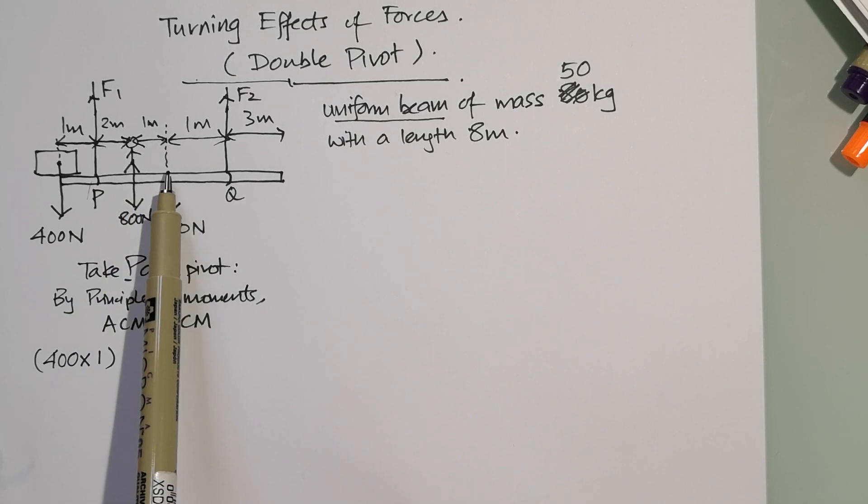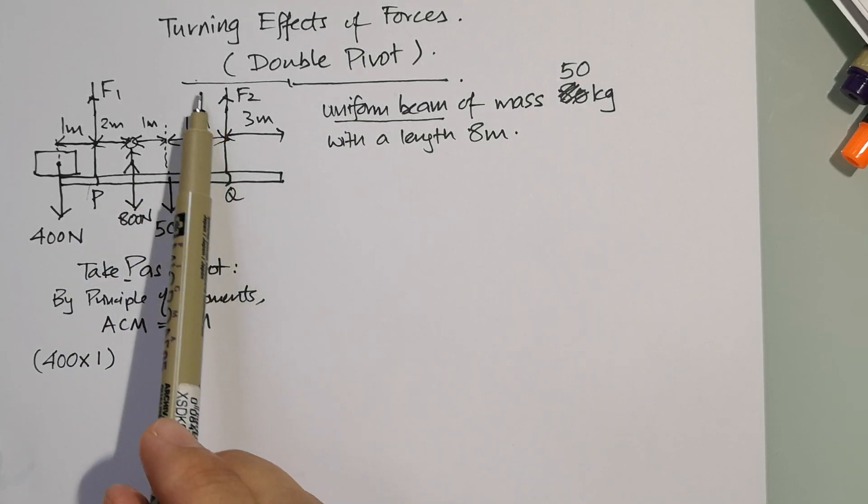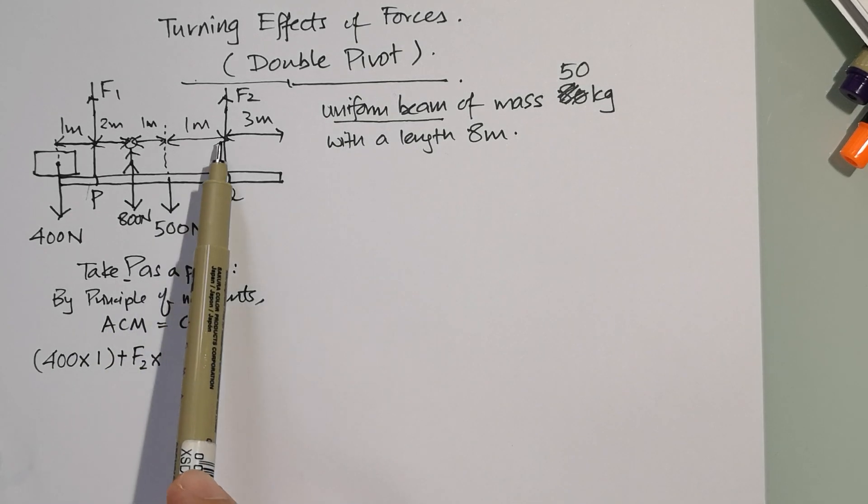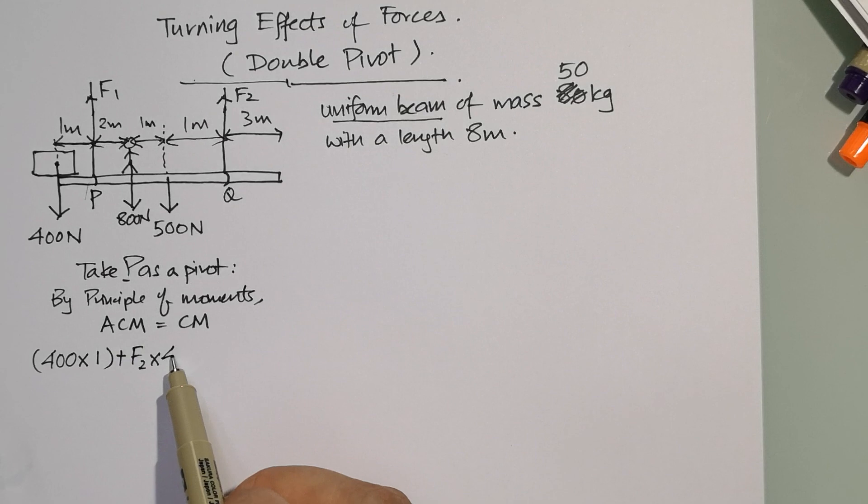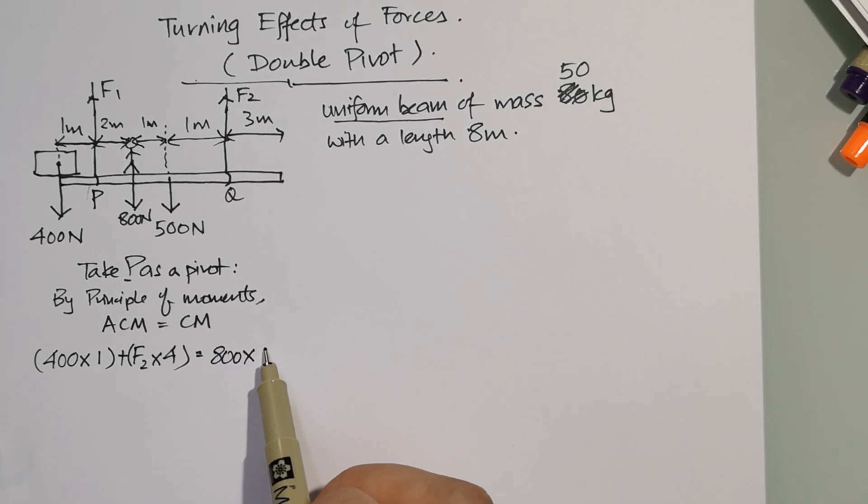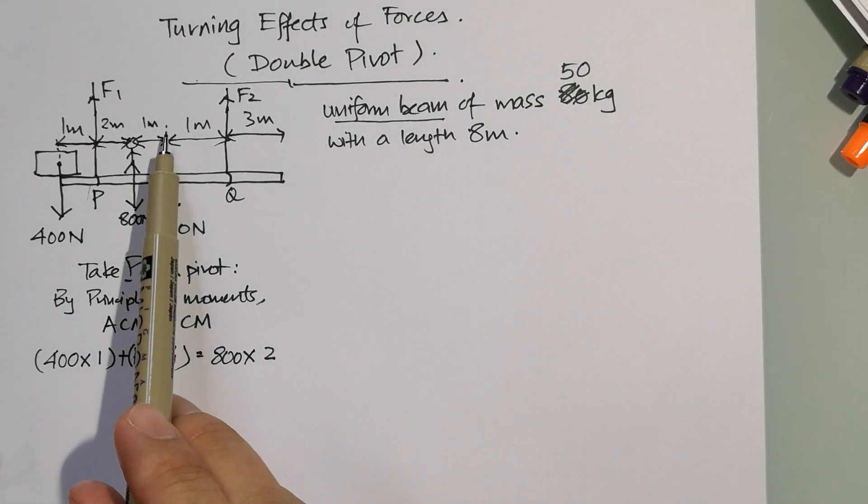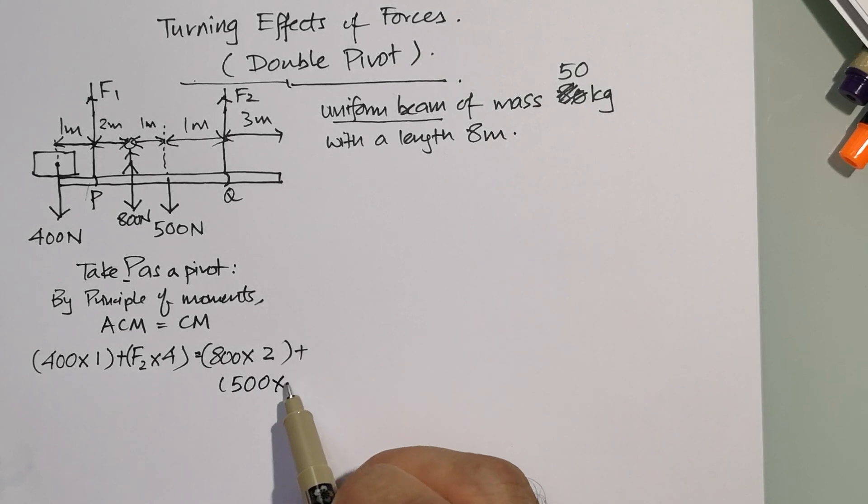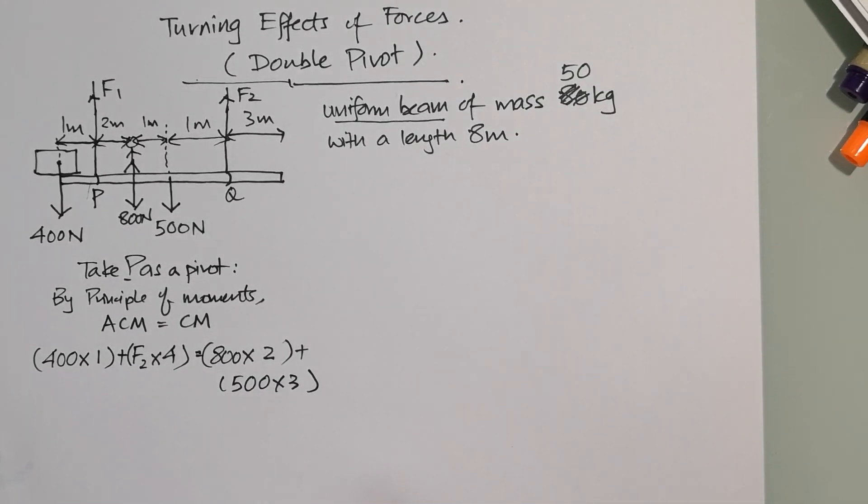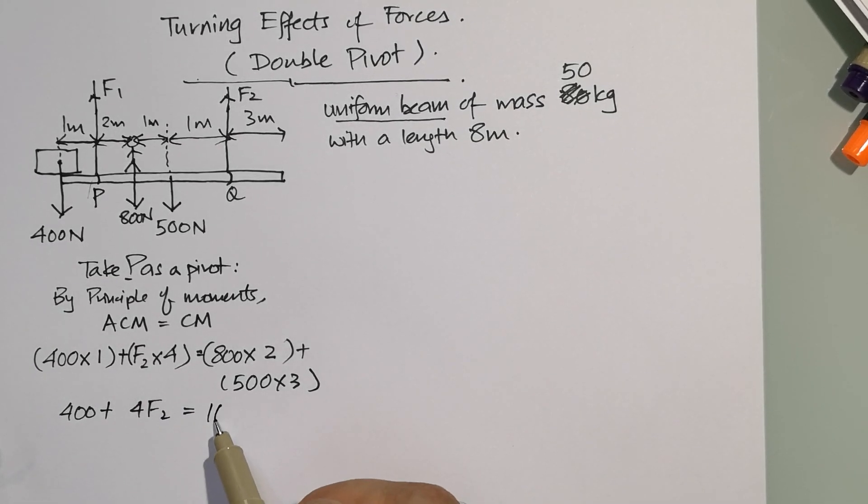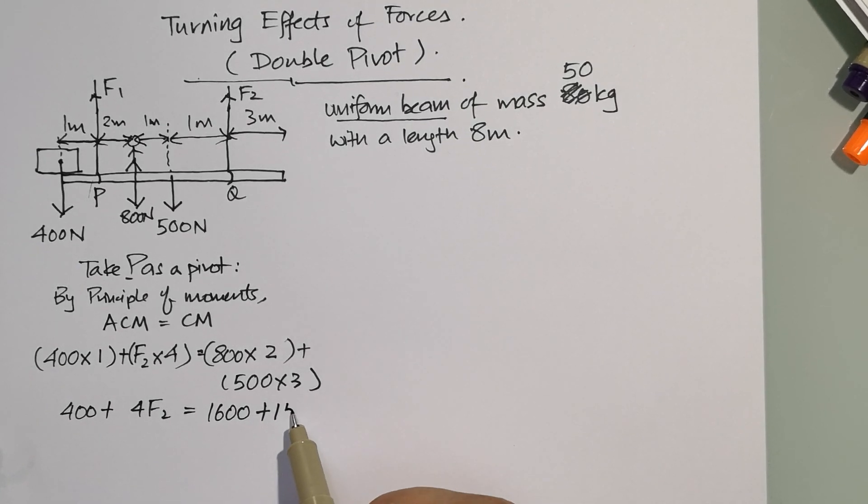The length is 1 plus 1 plus 1 plus 2, so that is 4. The clockwise moment: very easy, 800 times 2, 500 times 3. And then you calculate this: you have 400 plus 4F2 equals 1600 plus 1500.